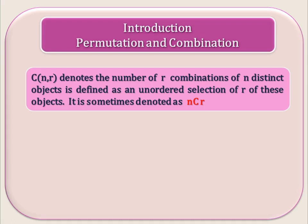C(n, r) denotes the number of r-combinations of n distinct objects. So C(n, r) means out of a total of n distinct objects we select r objects. The total number of objects is n, and out of n we select r. It is denoted as C(n, r), and this denotes the combination.